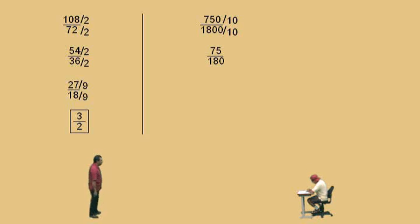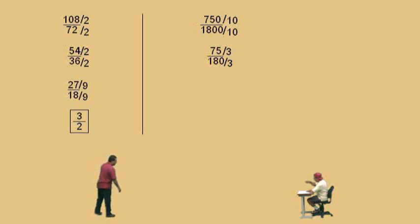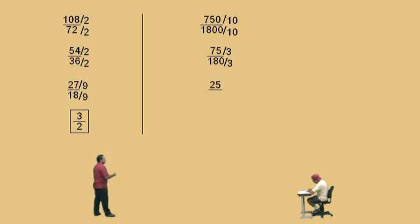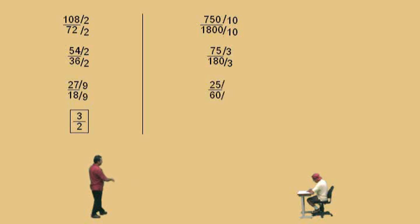Professor Perez: Now, what numbers divide evenly into a 75 and a 180? Charlie: 3. Professor Perez: Okay, we'll use a 3. A 5 would work too, but we'll stick with a 3 — because what's 75 divided by 3? Charlie: 25. Professor Perez: 25. Now, what's 18 divided by 3? Charlie: 6. Professor Perez: So what's 180 divided by 3? Charlie: 60. Professor Perez: That's 60. Again, we're working in steps. Now, Charlie, what number divides evenly into a 25 and a 60? Charlie: 5. Professor Perez: It's a 5, so now we'll use the 5. 25 divided by 5 is what? Charlie: 5. Professor Perez: Okay. 60 divided by 5? Charlie: 12. There you go — 5 twelfths.